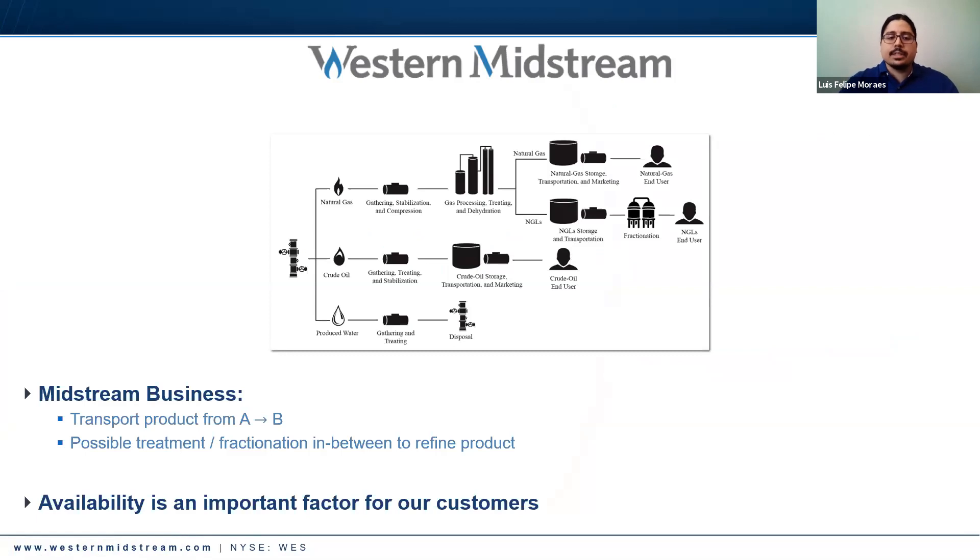Our customers want to use these pipelines to move their product, and availability is really important to them. If a part of our network isn't available, they can't get their product from point A to point B. That affects their own schedule - they'll have to stop production. Essentially it backs up the whole pipeline.